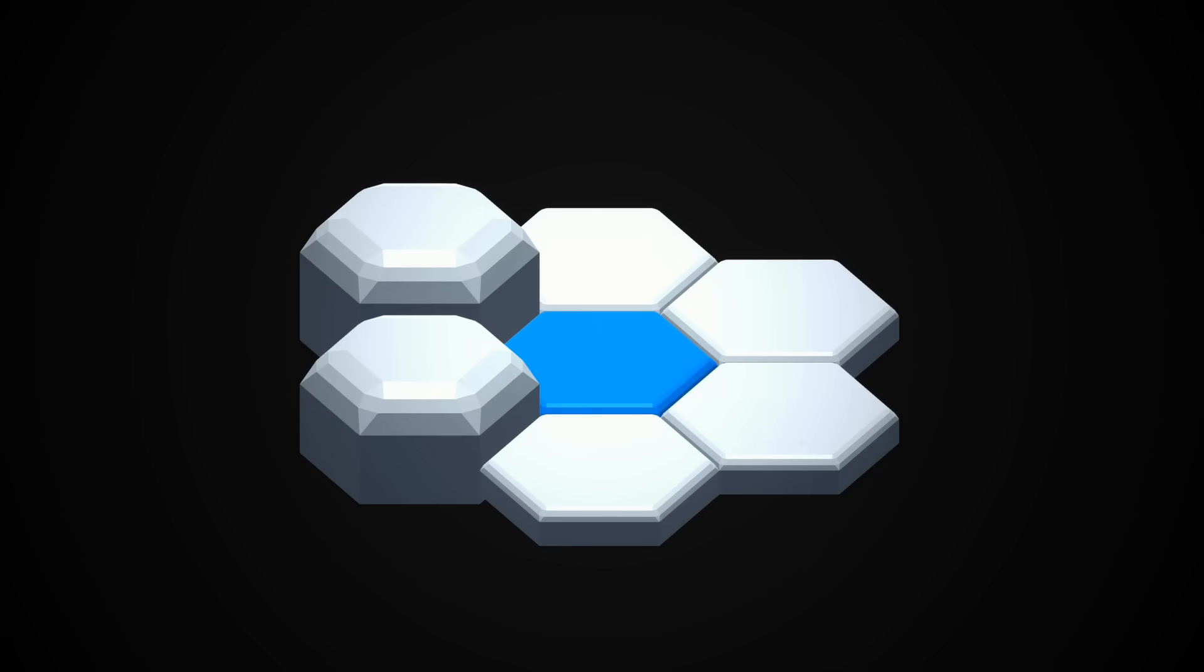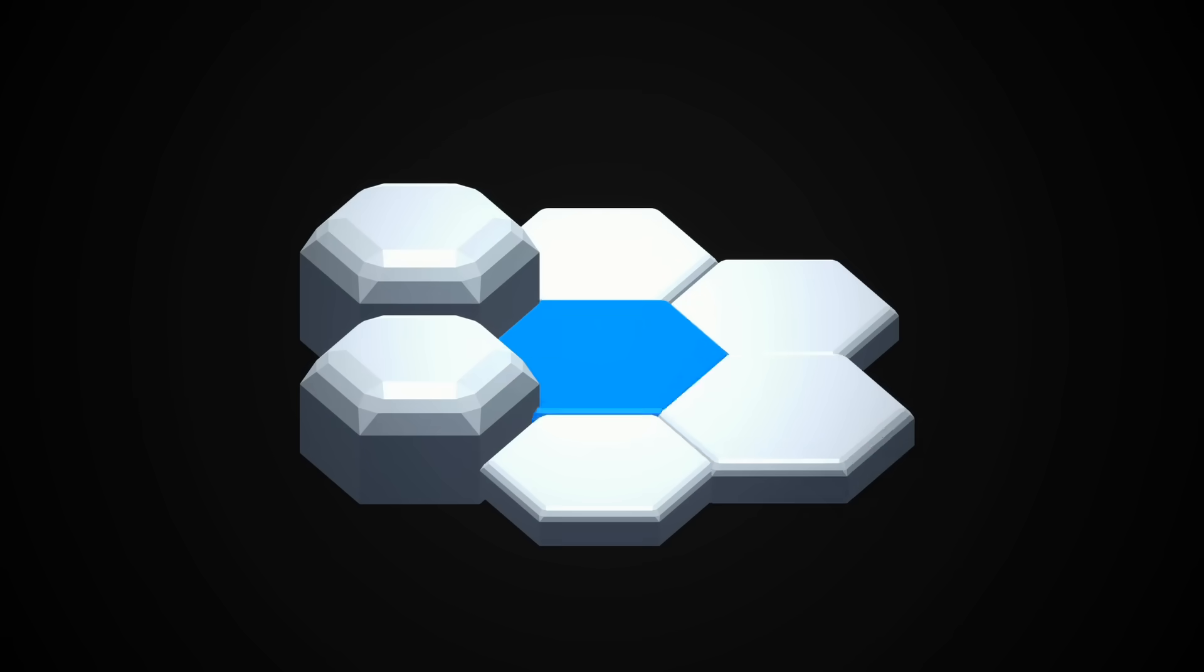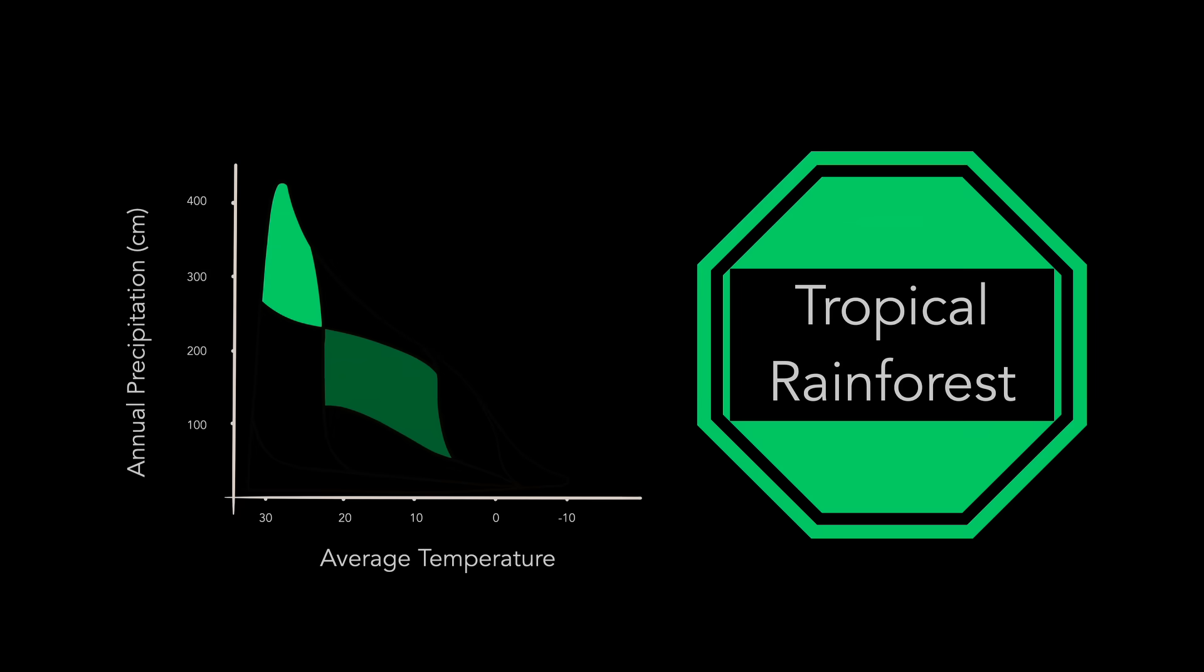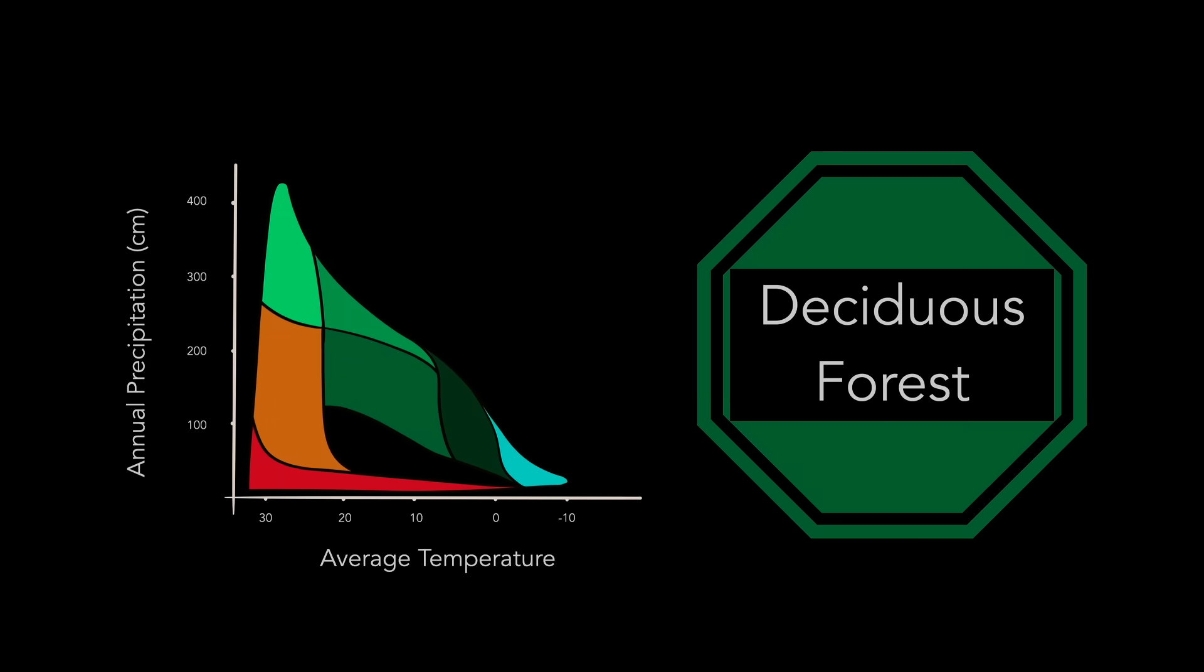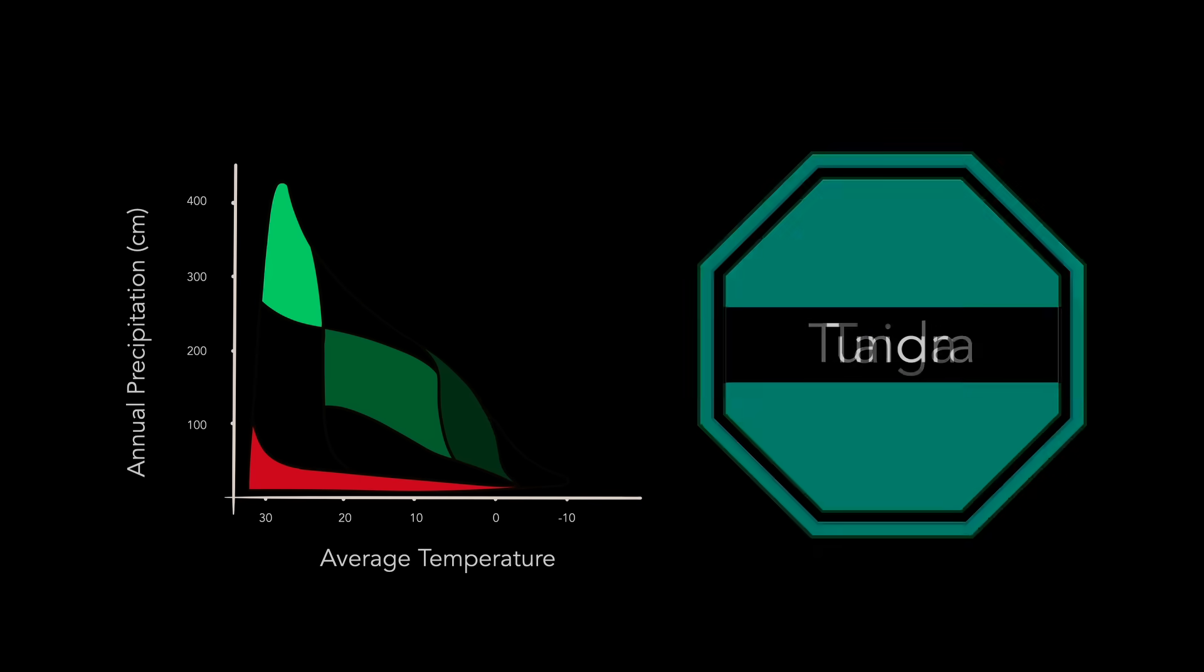We'll grow some mountains and some rivers and use those along with map position to calculate temperature and precipitation. Once we have those, we can use the Whittaker Biome system to assign each tile its own biome. Biomes range from rainforest to desert to tundra, and contain three resources that creatures are interested in: plant food, meat, and water.